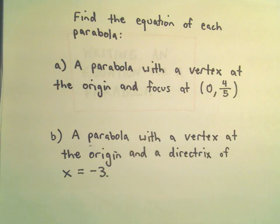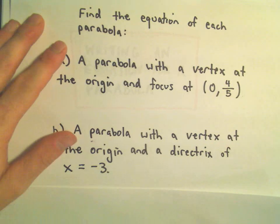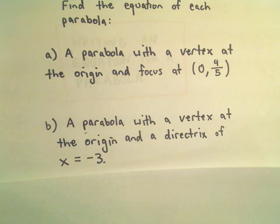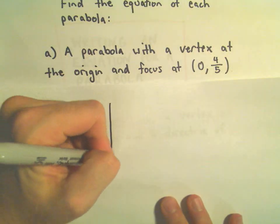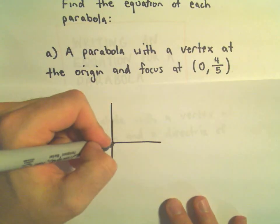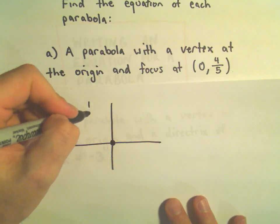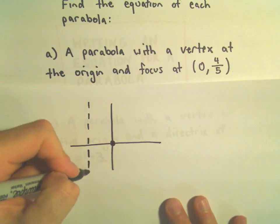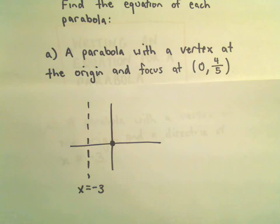And now we've got the equation of our parabola. So let's see, one other one here. Suppose we have a parabola with a vertex at the origin and a directrix of x equals negative three. So let's see, so now if the parabola's vertex is at the origin, it has a directrix of x equals negative three.